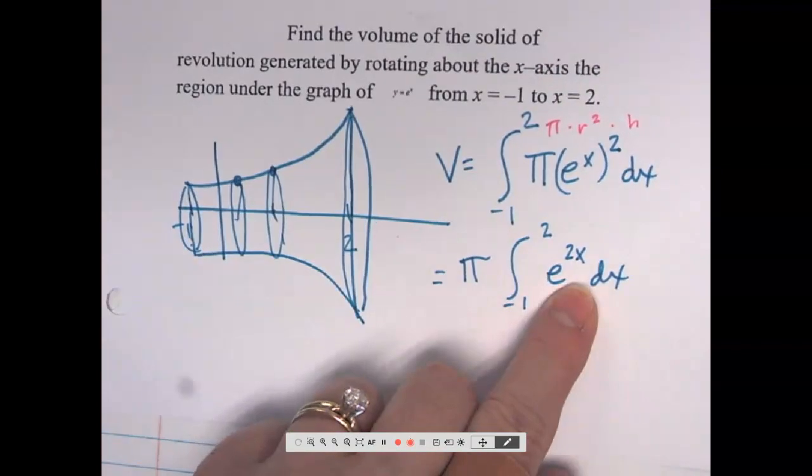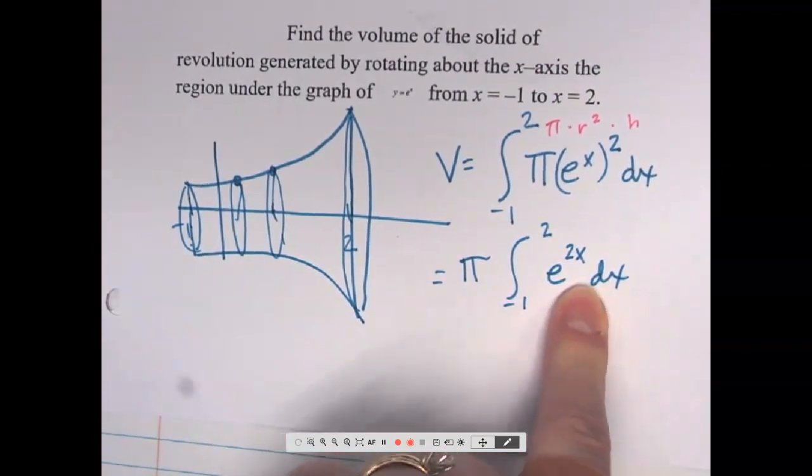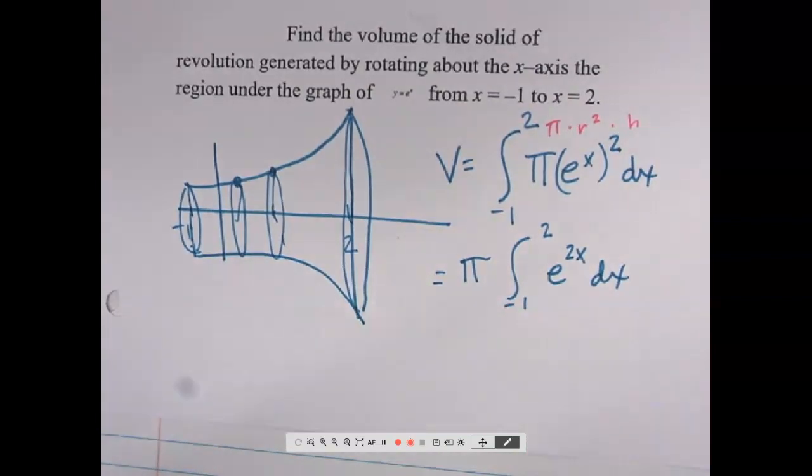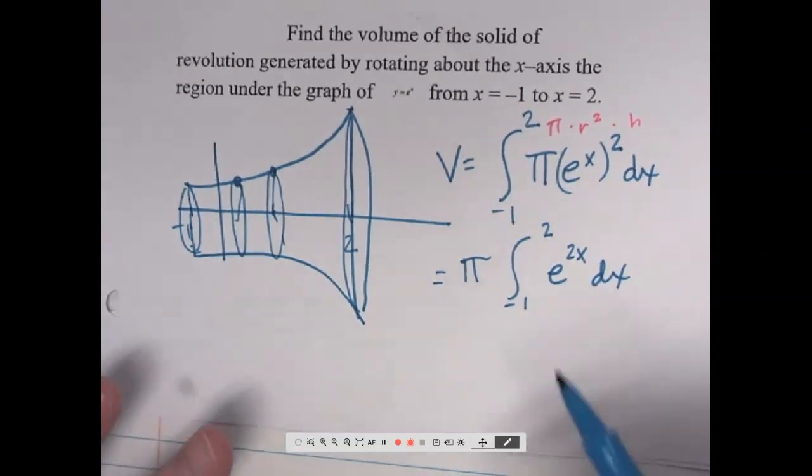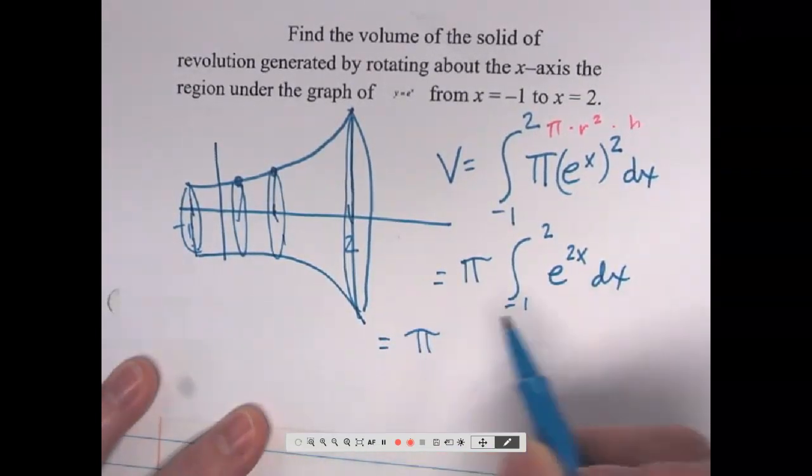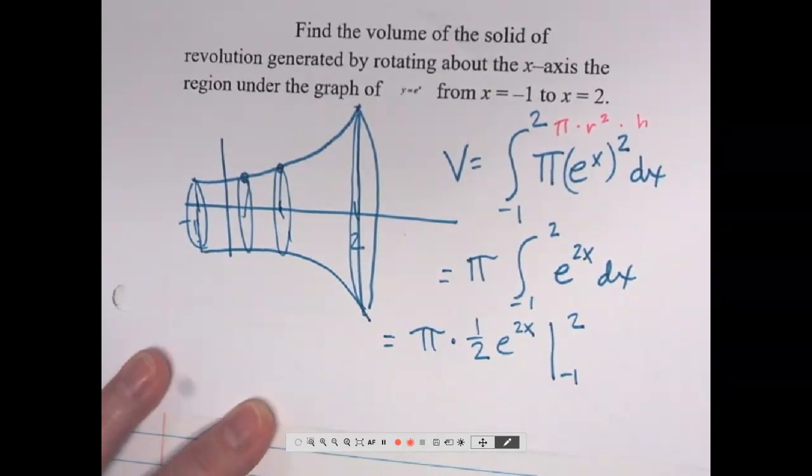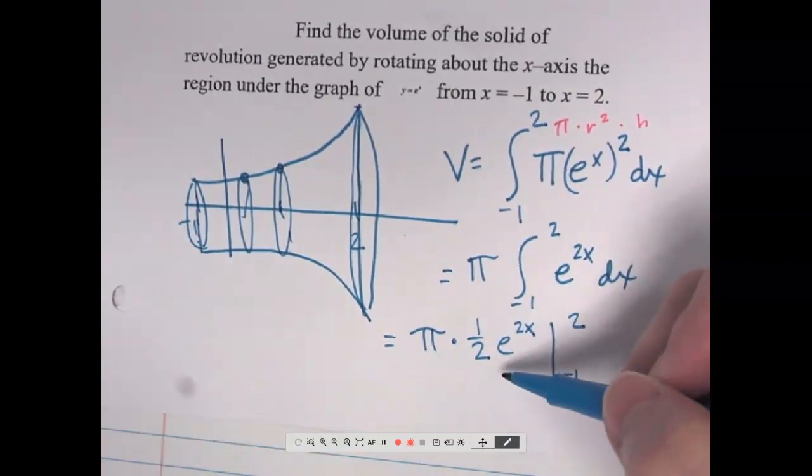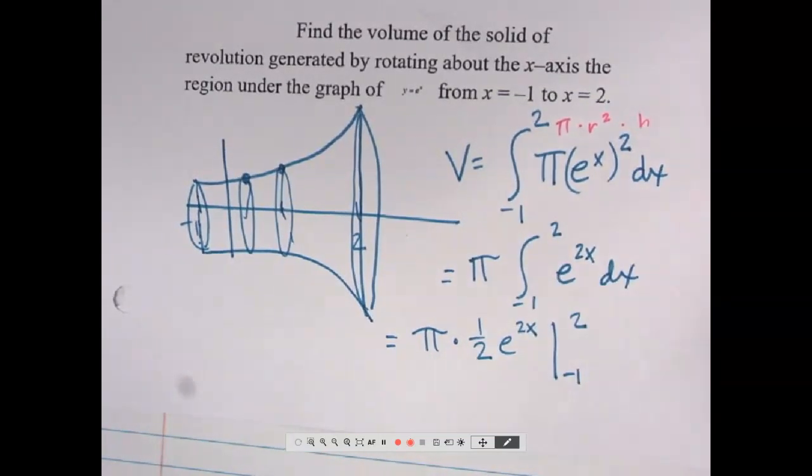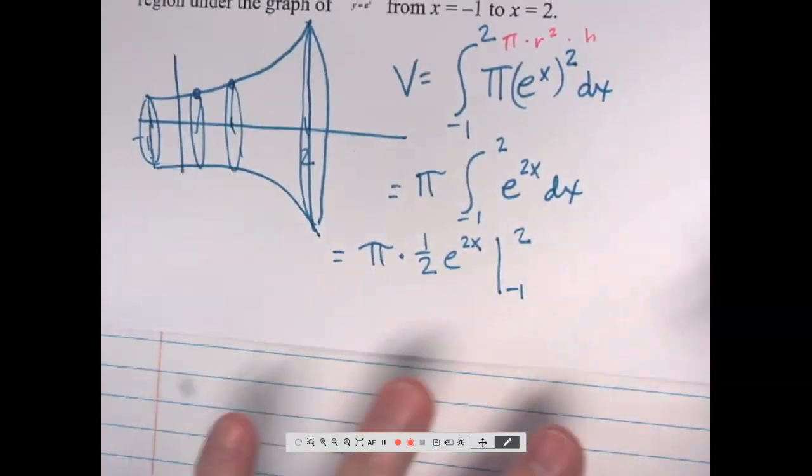So I have, I'm going to go ahead and bring that pi out front. Negative 1 to 2, e to the 2x dx. There's a little trick that we have to remember when we take the antiderivative of e to the x if there's no number in front. What is that trick? 1 over 2 in front? Is that what you said? Yes. So our antiderivative is 1 half e to the 2x from negative 1 to 2. So if it was a 3x, we'd have a 1 third. 4x, 1 fourth. If it's a 1x, then we don't have to worry about it.